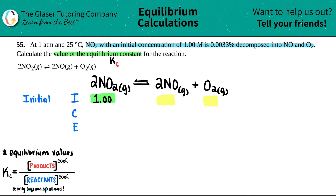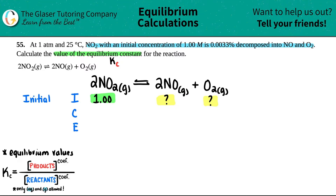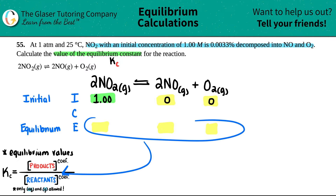They only told us the initial concentration of NO₂; no information was given for NO or O₂ at the start. Since the reaction starts with only NO₂ decomposing, initially we have zero NO and zero O₂. So the Initial row is: NO₂ = 1.00, NO = 0, O₂ = 0. The E row — Equilibrium — is the most important part because only those values go into Kc.